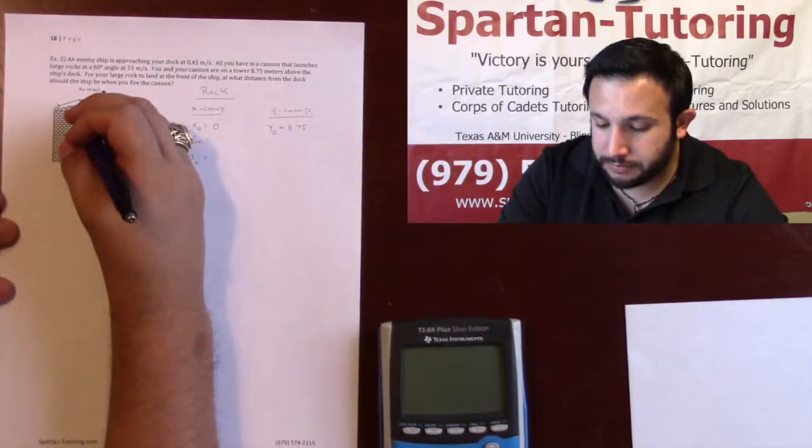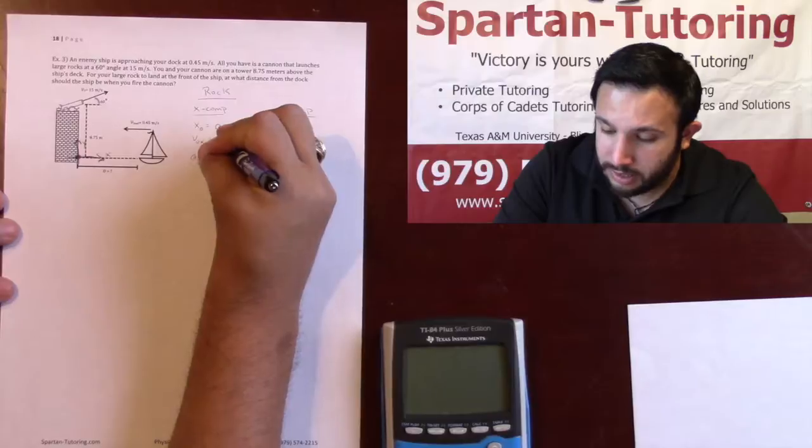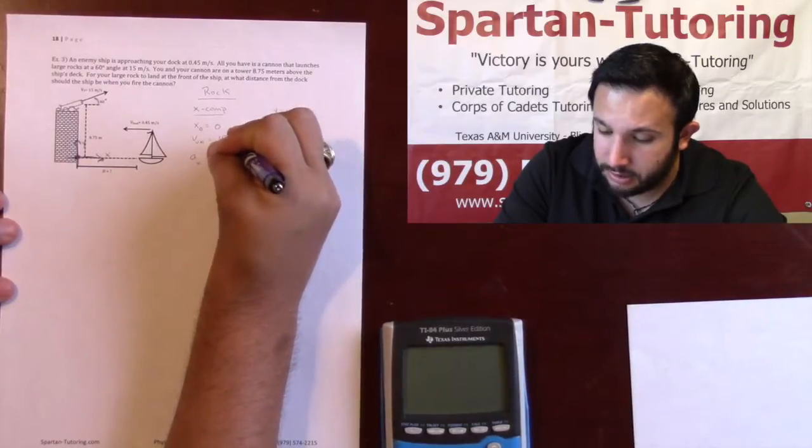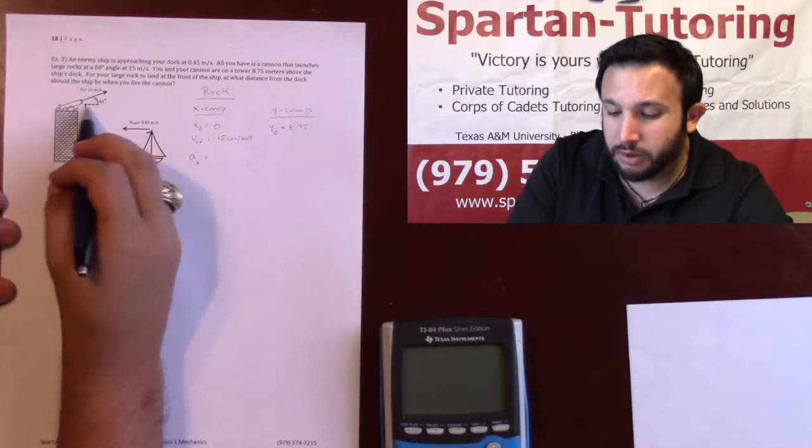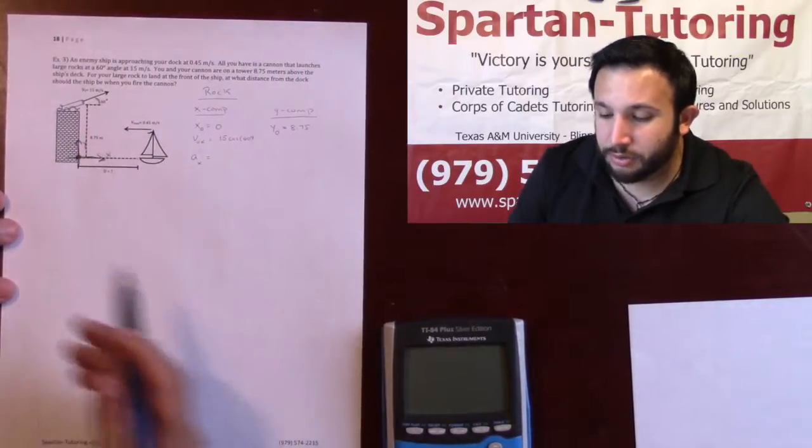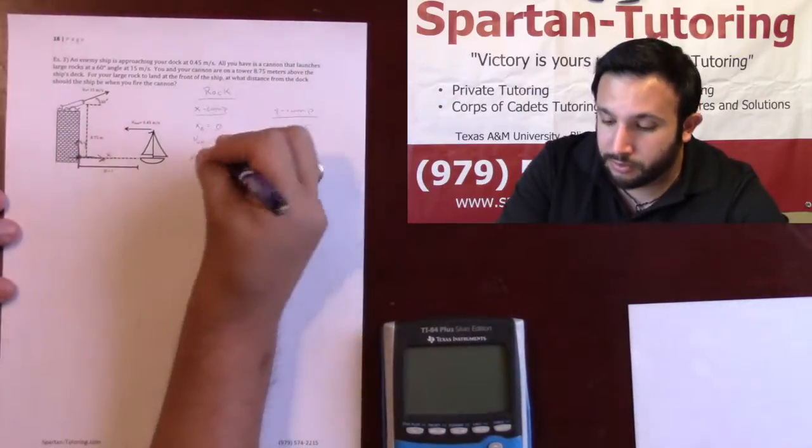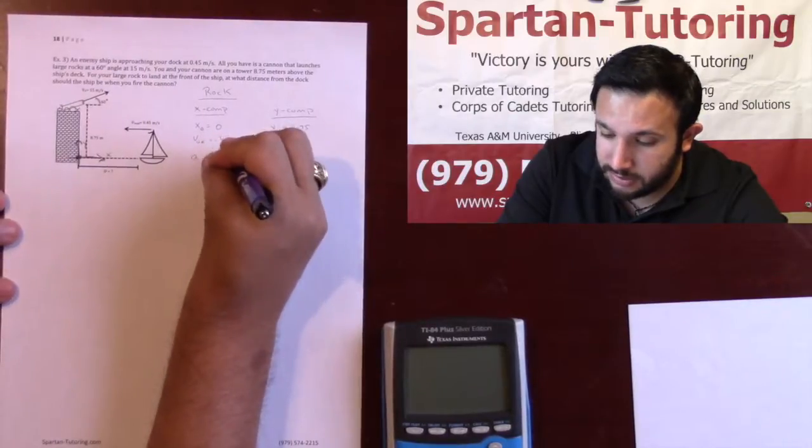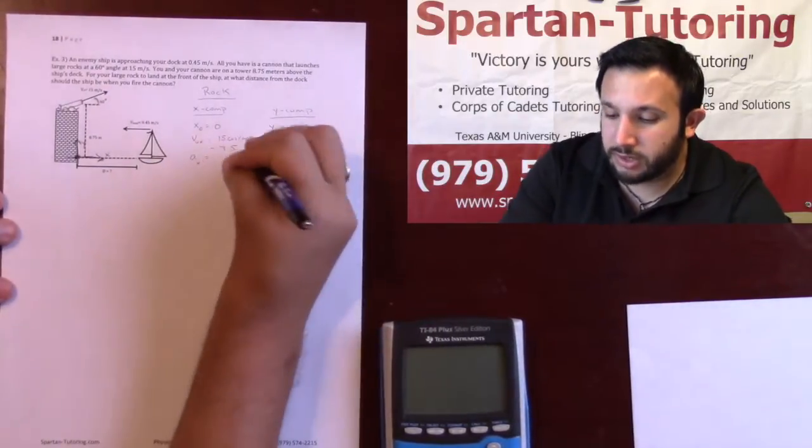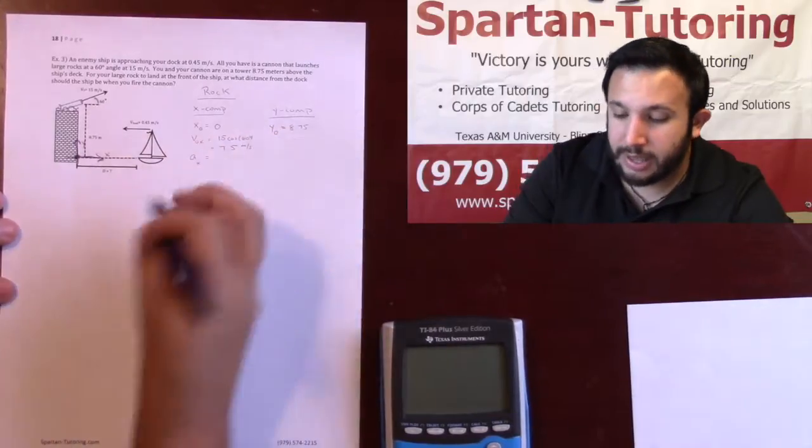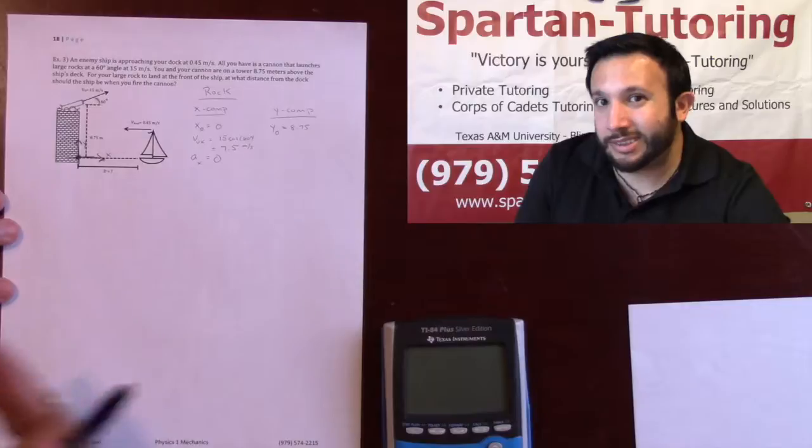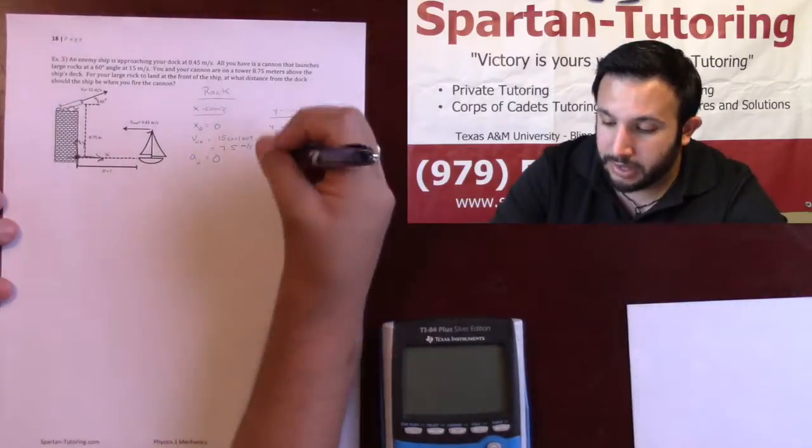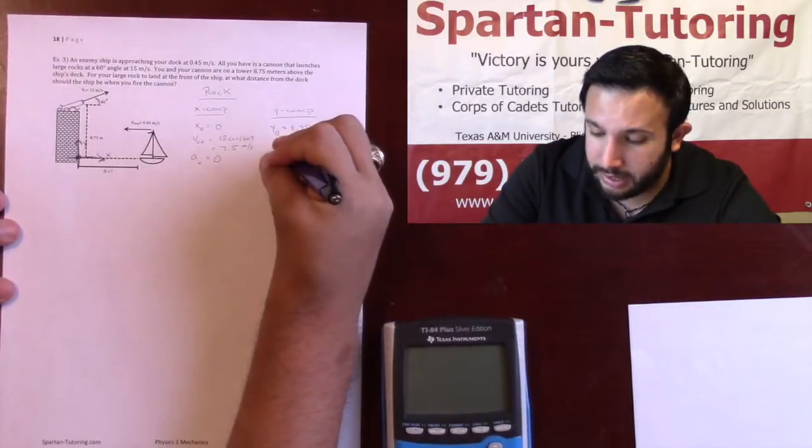v_0 in the x direction is going to be 15 cosine of 60 degrees. Your x component is adjacent to that angle, and we know the cosine of 60 degrees is one half, and so this is going to be 7.5. So v_0 in the x direction is 7.5 meters per second, and as for acceleration in the x direction, this is always zero unless otherwise specified.